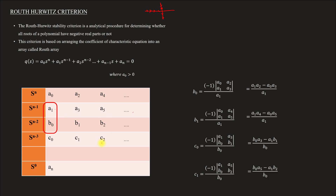For C2, we take a1, B0 and the next column. Most of the time, we continue to the next column in the same way. What we are finally doing is checking the first column of the Routh Array.